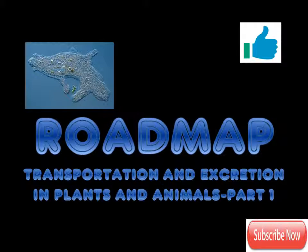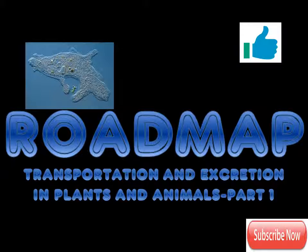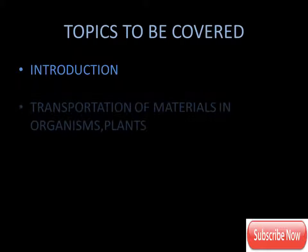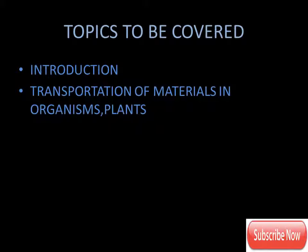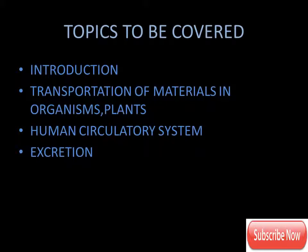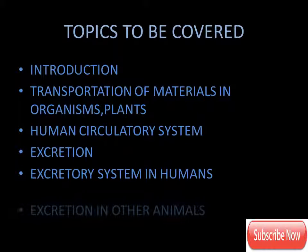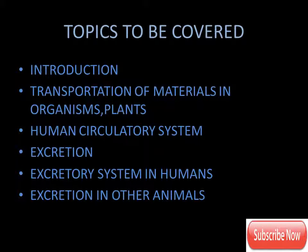Hello everyone and welcome to Roadmap. Today's topic is transportation and excretion in plants and animals — this is part one. The topics to be covered are: introduction, transportation of materials in unicellular and multicellular organisms, transportation of materials in plants, human circulatory system, excretion, excretory system in humans, and excretion in some other animals.